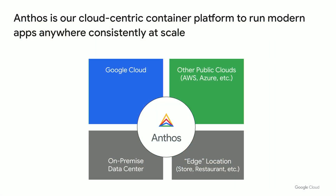Anthos was created to address the growing demand for hybrid and multi-cloud solutions for enterprise customers. Anthos is our cloud-centric platform to run modern apps anywhere consistently at scale. This means Anthos runs on Google Cloud, on other public clouds such as AWS and Azure, on premises like data centers, and also on premises like edge locations, stores, and restaurants. Anthos is the platform that brings all those pieces together, so you can have one common platform that simplifies your operations and brings consistent security and governance across the board.